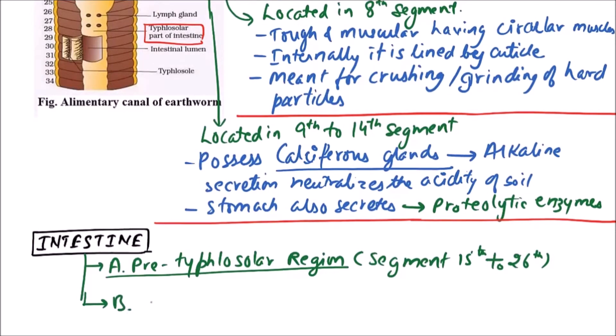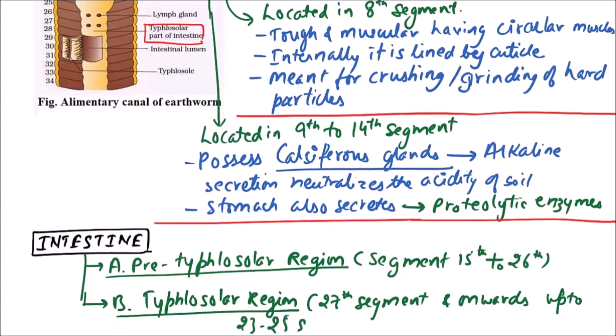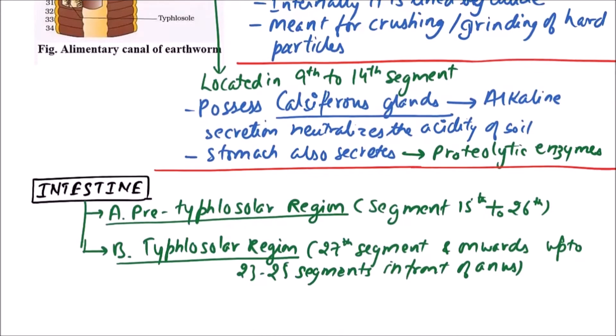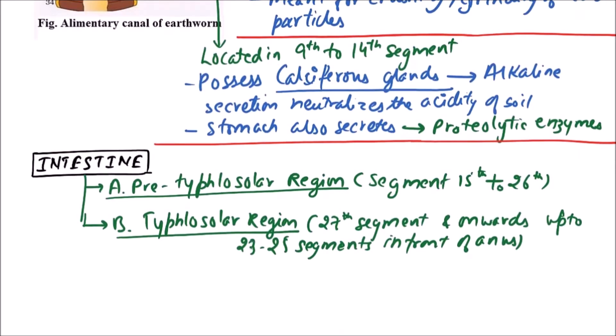The second one is typhlosolar region. It is located in twenty-seventh segment and onwards, up to twenty-three to twenty-five segments in front of the anus. That is, it is absent in the last twenty-two to twenty-five segments.